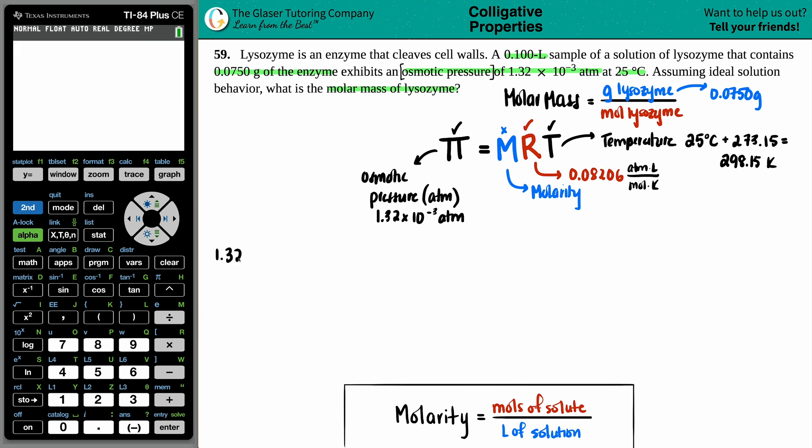Maybe I'll start over here. 1.32 times 10 to the negative 3 equals x times the R value times the T value. T was 298.15, and the R value was 0.08206. If we want, we can multiply these two together just to kind of get one number on this side. So let's see. 0.08206 times 298.15. Okay.